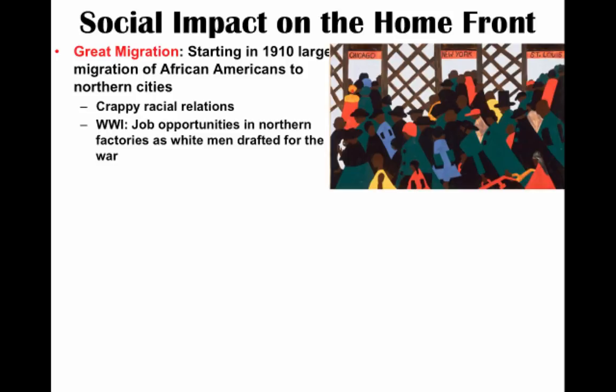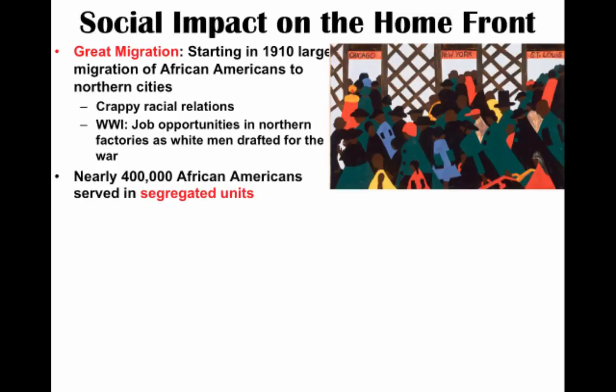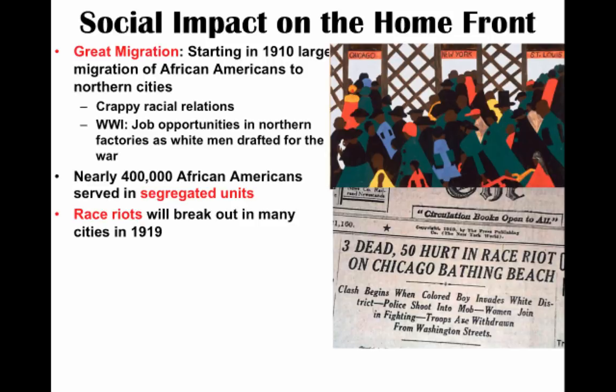During this time you also see an increase in Mexican immigration into the U.S. to work in agriculture, primarily in the Southwest, to take over jobs needed during the war effort. Nearly 400,000 African Americans served in the U.S. Armed Forces, though unfortunately in segregated units. Civil rights leaders like W.E.B. Du Bois felt that if African Americans fought for the United States, this would lead to greater equality when they returned. This unfortunately was not a reality, as race riots broke out in 1919 due to racial tension resulting from these demographic changes such as the Great Migration.